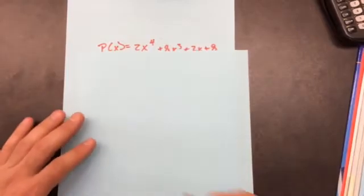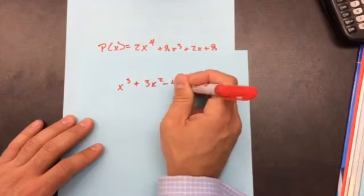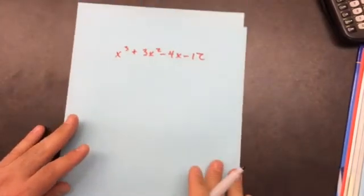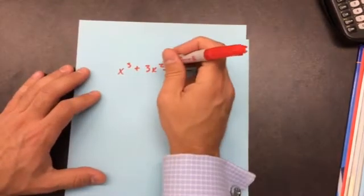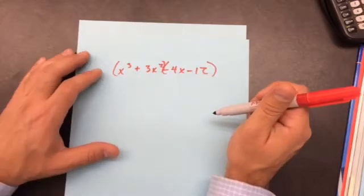I'm going to do another example. Another example right here is they give me x^3 + 3x^2 - 4x - 12. If they give me four terms and they don't tell me any factors, I'm always going to use factor by grouping. So I'm going to put the first two terms in parentheses and the last two terms in parentheses.